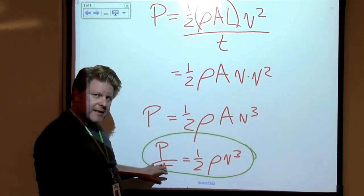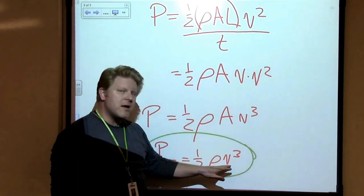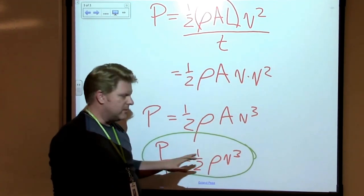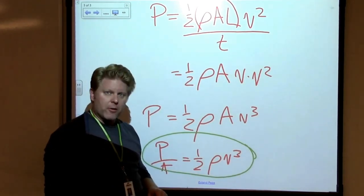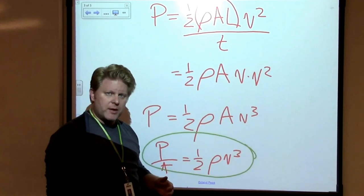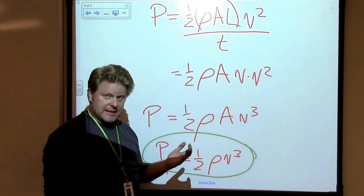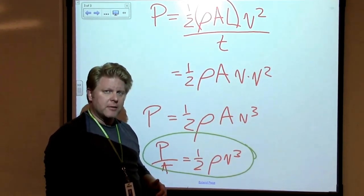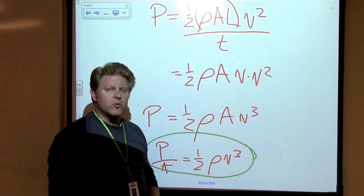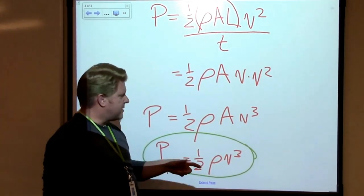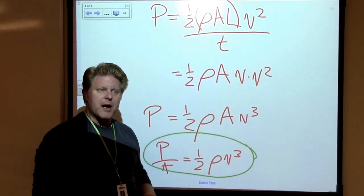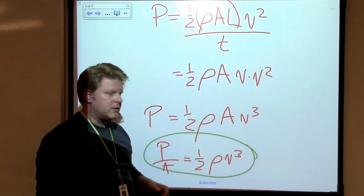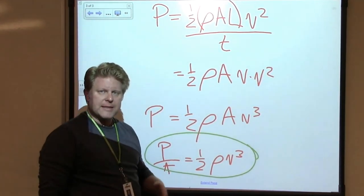If we increase the velocity a little bit, what happens to the power? Does it also go up a little bit? Does it stay the same or does it go up a lot? Consider that we're talking about the cube of the velocity. So as the velocity increases by, say, two miles an hour, what happens to the power that's available for that same area? Think about that and let me know.